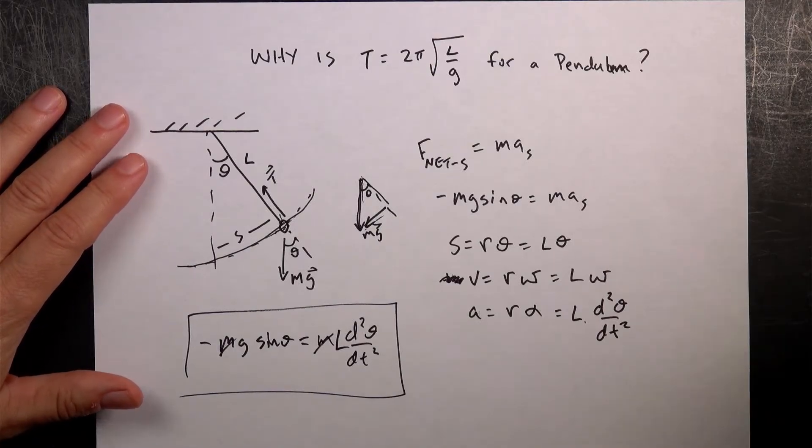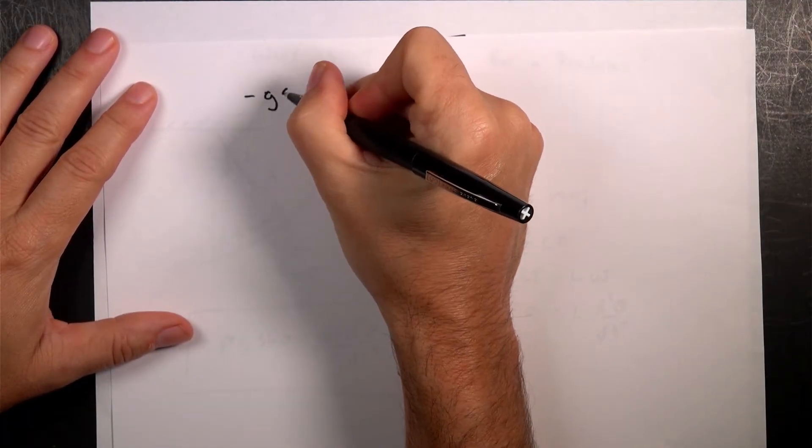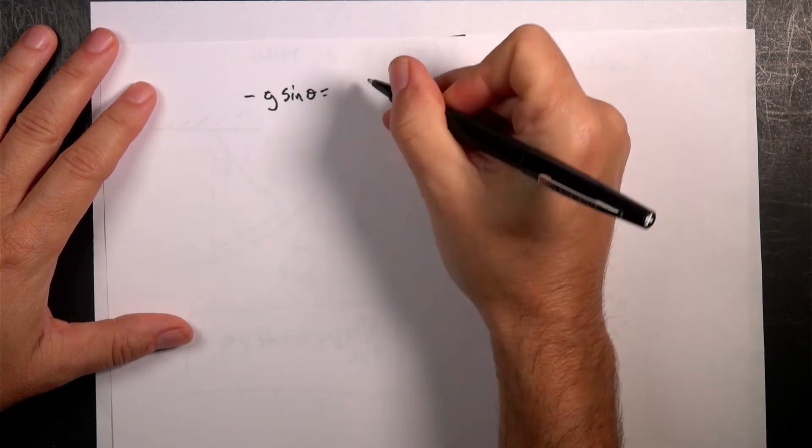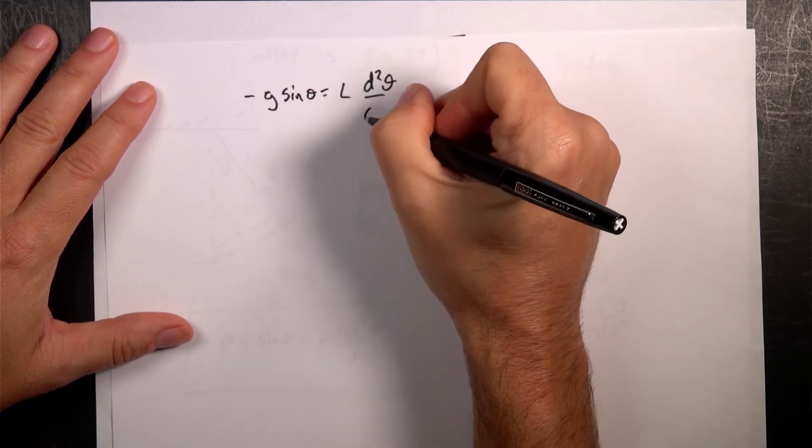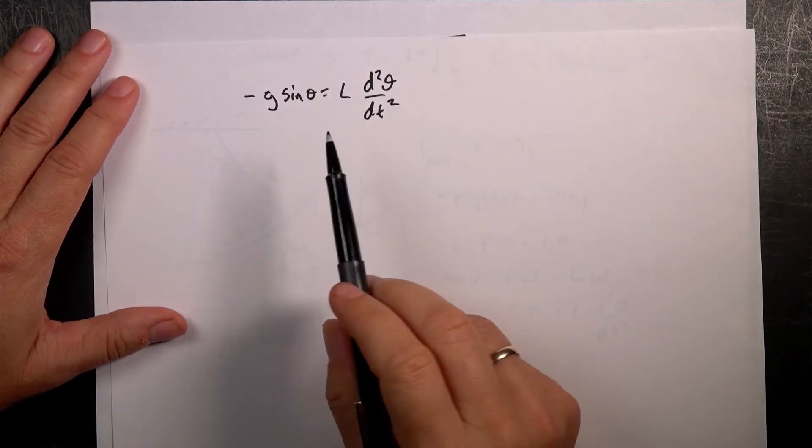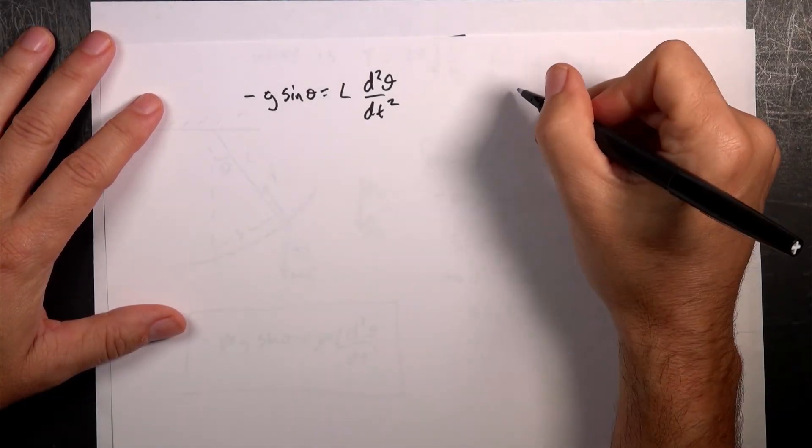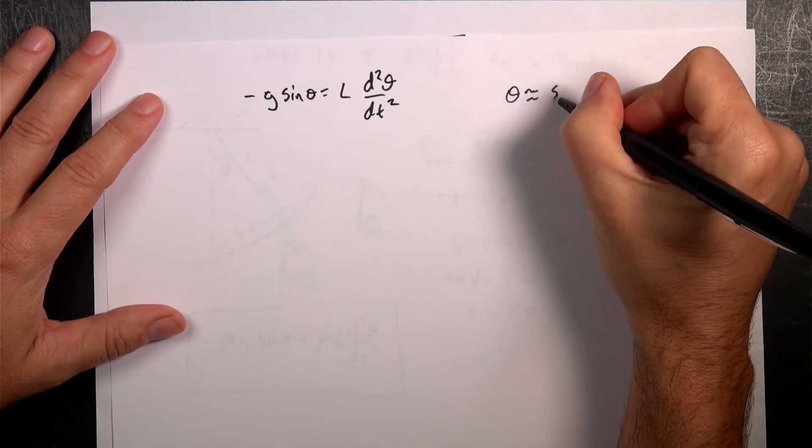So, what do we do now? Well, the next step, let me rewrite this equation. Negative g sin theta equals L times the second derivative of theta with respect to time. That's what we have. Now, the next step is to say, what if theta is small?